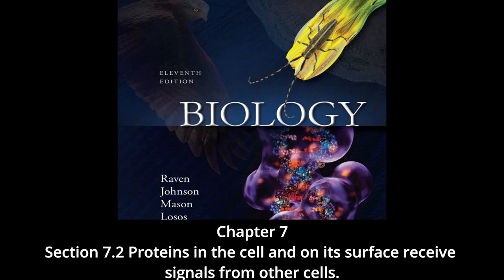Most signal molecules are water soluble — including neurotransmitters, peptide hormones, and growth factors — and cannot diffuse through cell membranes. Therefore they must bind to receptor proteins on the cell surface. These cell surface receptors convert the extracellular signal to an intracellular one by producing a change within the cell's cytoplasm. Almost all cell surface receptors belong to one of three superfamilies: chemically gated ion channels, enzymic receptors, and G-protein linked receptors. Chemically gated ion channels are receptor proteins through which ions can pass.